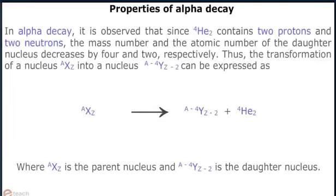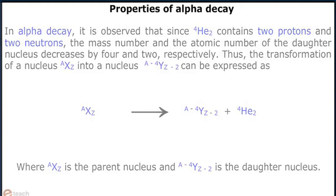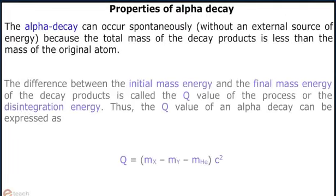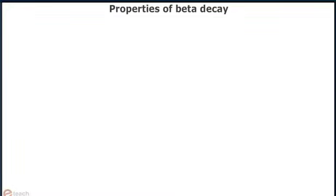Properties of alpha decay: In alpha decay, since 4He2 contains two protons and two neutrons, the mass number and the atomic number of the daughter nucleus decrease by 4 and 2 respectively. Thus, the transformation of a nucleus AXZ into a nucleus A-4YZ-2 can be expressed as: AXZ → A-4YZ-2 + 4He2.